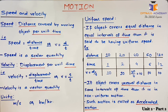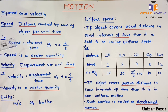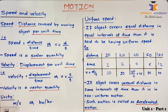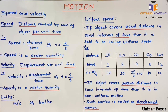Speed and velocity have the same units — they are measured in meter per second or kilometer per hour. This can be explained by their formulae: distance upon time or displacement upon time. Distance and displacement are measured in meters, and time is measured in seconds, so the unit is meter per second. For moving vehicles and cars, we express velocity in kilometers per hour.